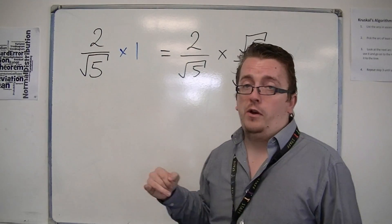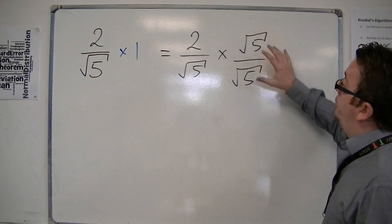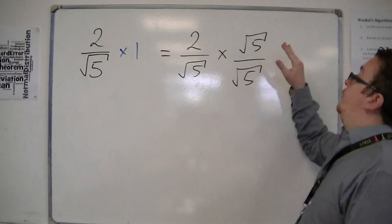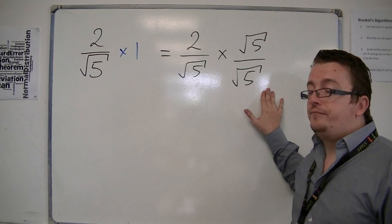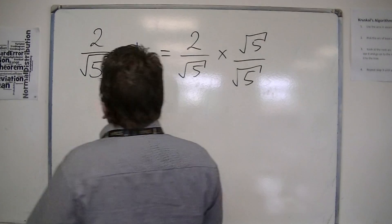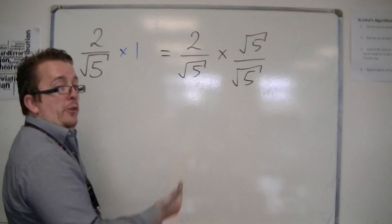Okay, so you can choose what value 1 is going to be. And in this case, I'm always going to choose 1 to be this irrational number, the root 5, over itself. So, root 5 over root 5. If this had been root 7, this would be root 7 over root 7. So, then I just have to perform one fraction multiplied by another.